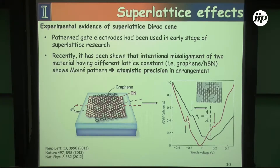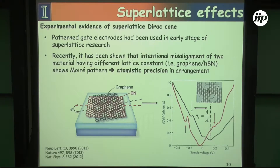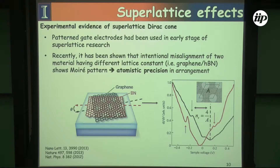We can see visually these superlattice Dirac points showing up at the edge of the Brillouin zone as dips in the dI/dV of the graphene. This corresponds to points where in the superlattice Brillouin zone we have four electrons per unit cell, corresponding to the two spin and two valley SU(4) degree of freedom in graphene. Because the superlattice size is about 14 nanometers, one can also think about trying to do more interesting things with this.